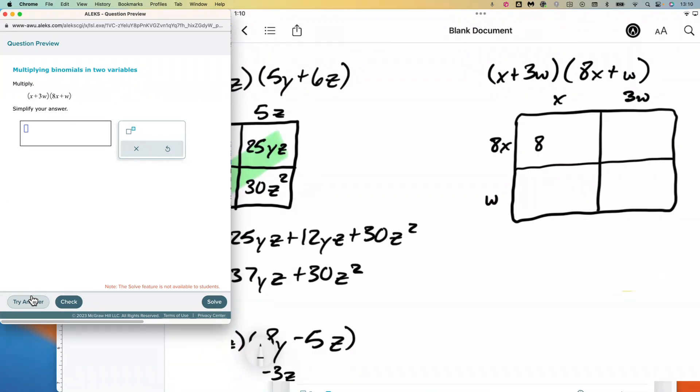So eight times one is 8x². Eight times three is twenty-four wx. You can put xw or wx, it doesn't matter.